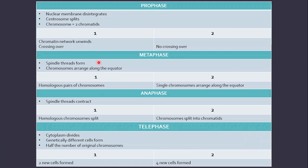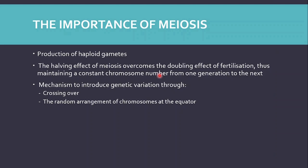This is a summary of each phase of meiosis and what happens in that phase, including what happens specifically in meiosis I and meiosis II. It also compares the differences between meiosis I and meiosis II — you can read it as it is a very nice summary.